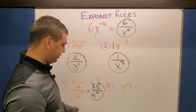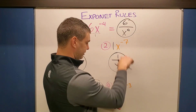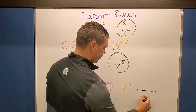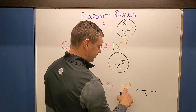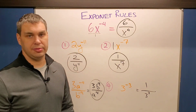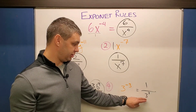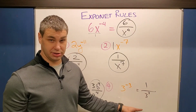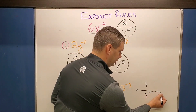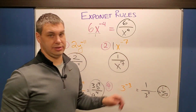The last basic example is similar — it's all going to go to the bottom and become three to the positive third, with a placeholder of one on top. A lot of times your teachers want you to evaluate this, so three to the third is 27 — three times three times three. So the final answer is one over 27.